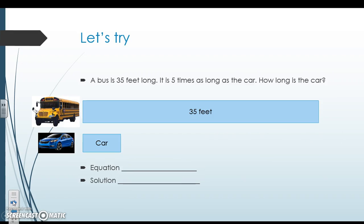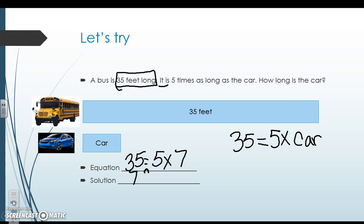Here's another one. A bus is 35 feet long. It is five times as long as the car. So we want to know how long the car is. Well, we know that 35 is equal to five times seven. Right? So the solution is this car is seven feet long because the bus is five times longer.